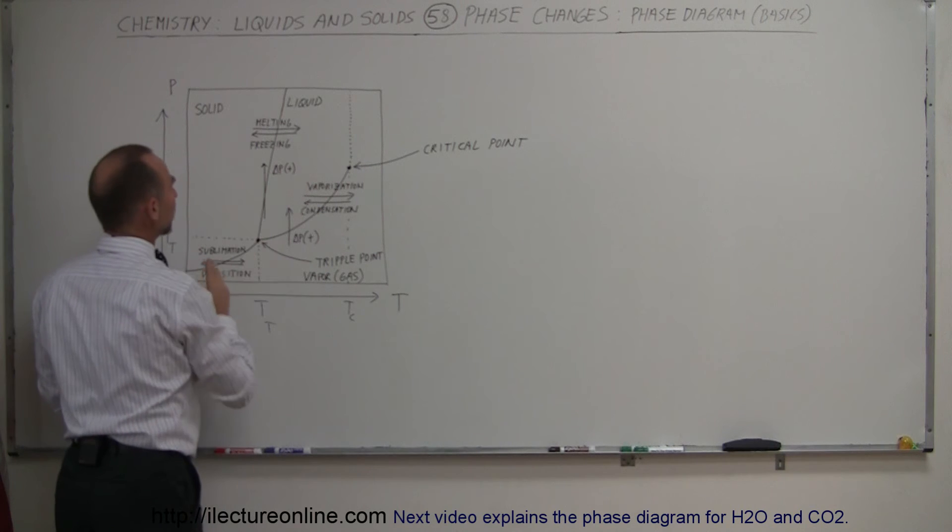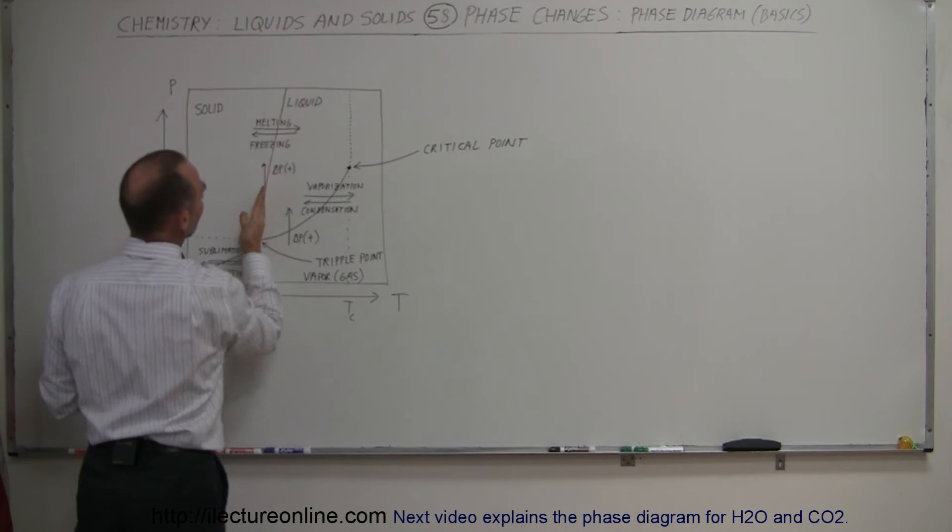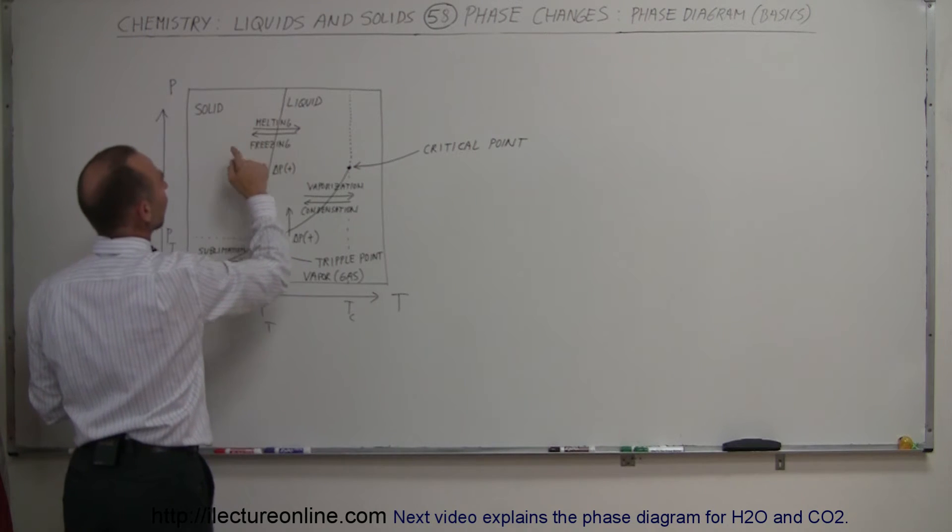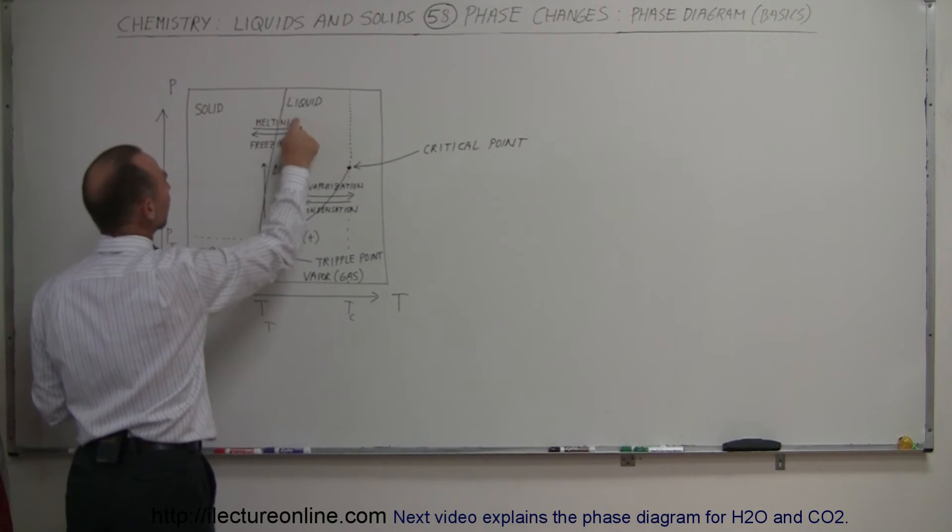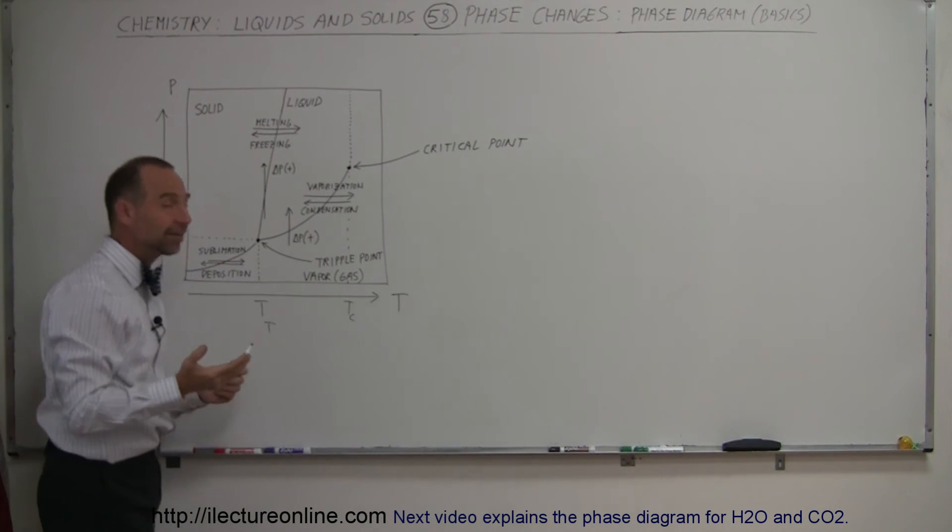Now, what do these lines represent? Notice the line from the triple point up at an angle. It typically has a positive slope like this. Notice the division line between liquid and solid. So when you go from right to left, we freeze things. When we go from left to right, we melt things. And that makes sense. Notice on the temperature, when you go from right to left, it goes from hot to cold.